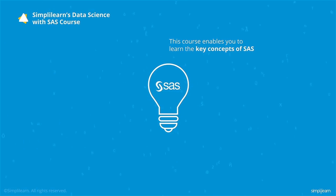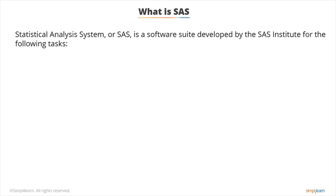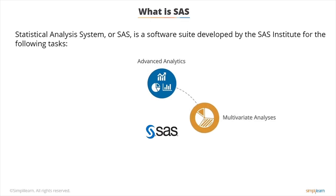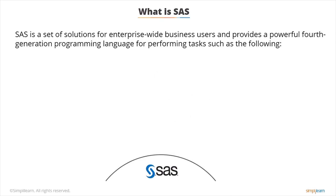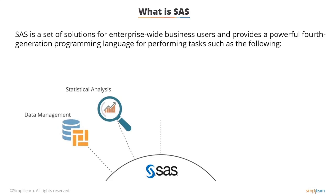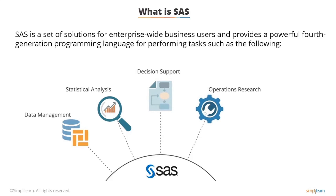This course enables you to learn the key concepts of SAS which are important for data analytics using practical examples. Statistical Analysis System, or SAS, is a software suite developed by the SAS Institute for advanced analytics, multivariate analyses, business intelligence, data management, and predictive analytics. SAS is a set of solutions for enterprise-wide business users and provides a powerful fourth-generation programming language for tasks such as data entry, retrieval and management, statistical and mathematical analysis, business planning, forecasting and decision support, operations research, project management, and quality improvement.